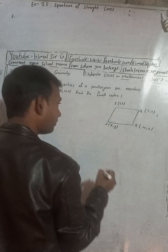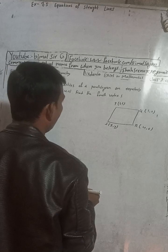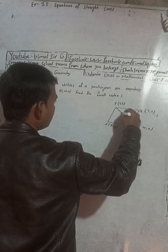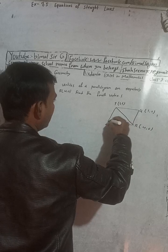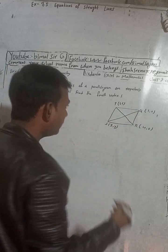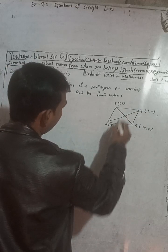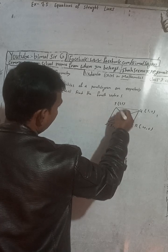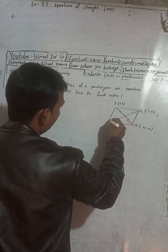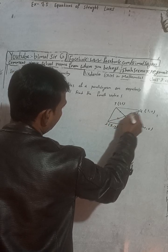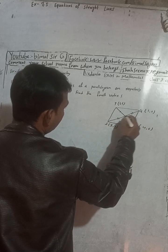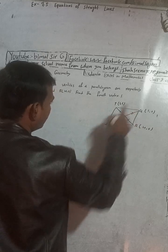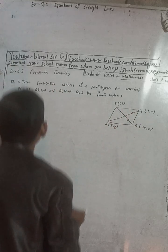I will join the diagonal of the parallelogram. We know that the diagonals of a parallelogram bisect each other — that means this point bisects both diagonals. From here to here is equal to from here to here. That means the midpoint is the same for both diagonals, so the midpoint of one diagonal equals the midpoint of the other.